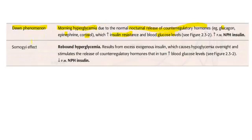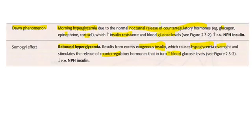As compared to Somogyi effect, there is rebound hyperglycemia — reserved from excess exogenous insulin. We are using insulin from outside, like injections, which cause hypoglycemia at night and stimulate the release of counter-regulatory hormones, which in turn increase blood glucose levels. So here you have to remember: there is a rebound hyperglycemia, and in dawn phenomenon there is already normal release of counter-regulatory hormones.